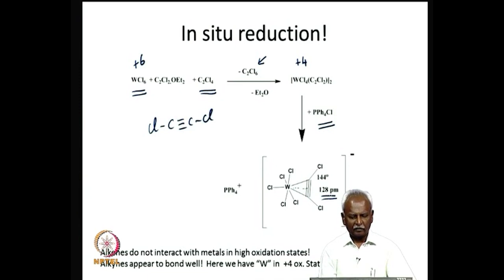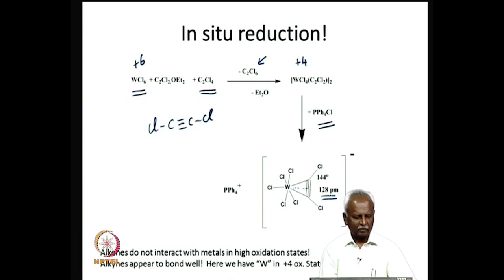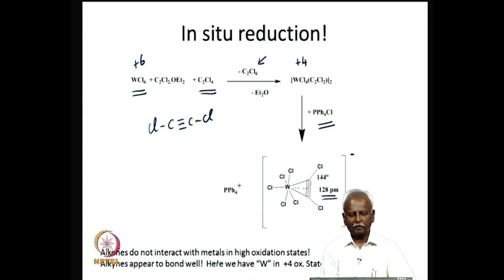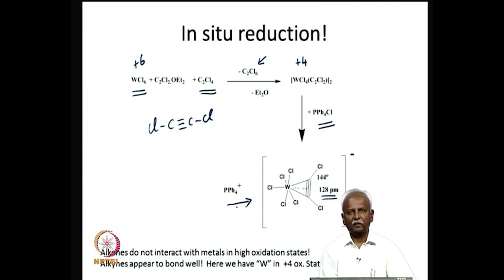Alkenes do not usually interact with metals in high oxidation states, whereas alkynes appear to bond well. This is a rather unusual situation where tungsten is in the plus 4 oxidation state and is still interacting with an alkyne.